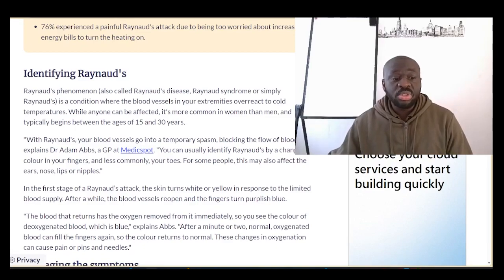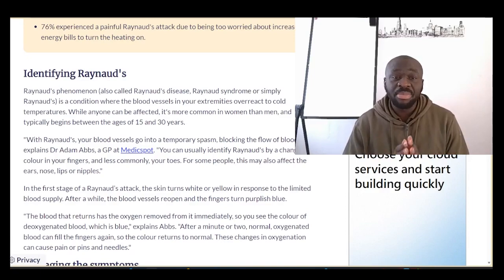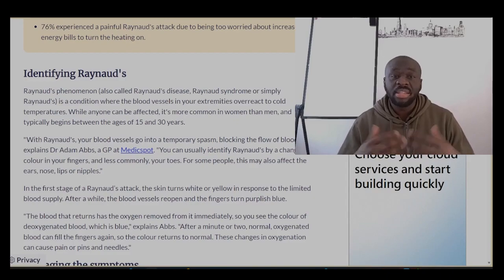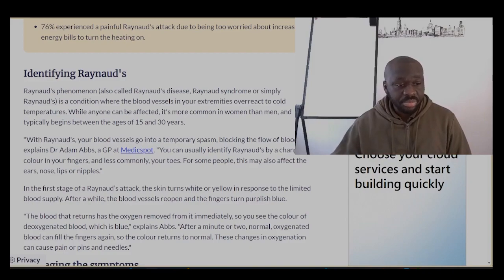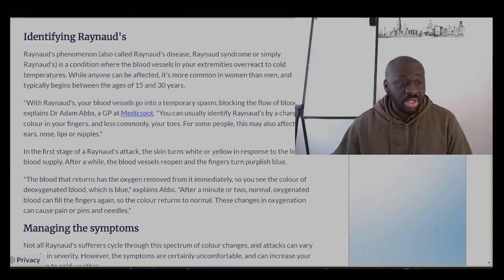With Raynaud's, your blood vessels go into a temporary spasm and block the blood flow to extremities supplied by end arteries or blindly terminating blood vessels. Because the blood flow is initially deoxygenated — lacking oxygen — you notice what we call cyanosis: a bluish discoloration of those parts of the body. Eventually they become pink when perfused with oxygenated blood. Not everyone goes through this full spectrum, but it is the typical presentation.